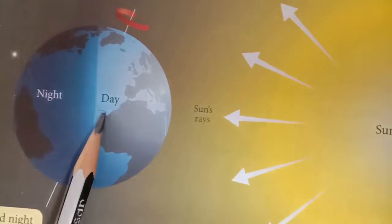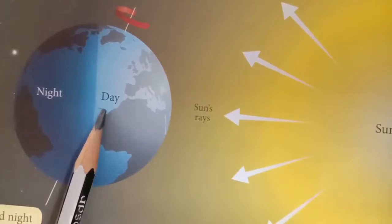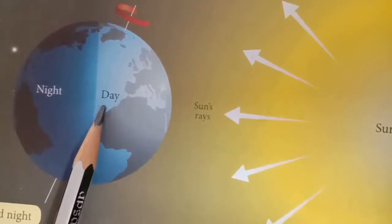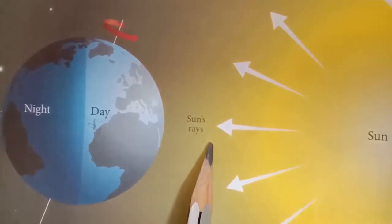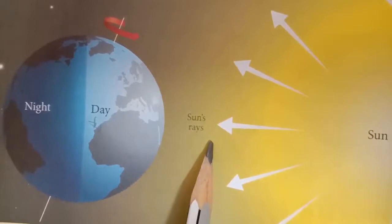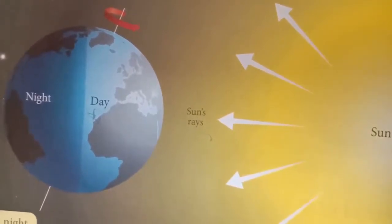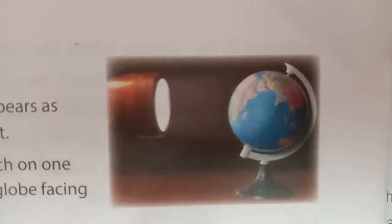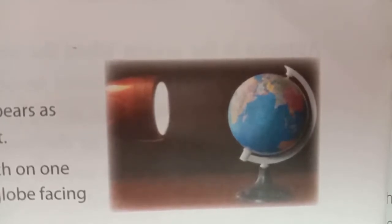The part of the earth on which the light of the sun falls experiences day, and the part that is dark and away from the sun experiences night. The sun rises in the east direction and sets in the west direction. Take one globe and one torchlight. The earth spins from west to east — that is why it appears that the sun rises in the east and sets in the west.